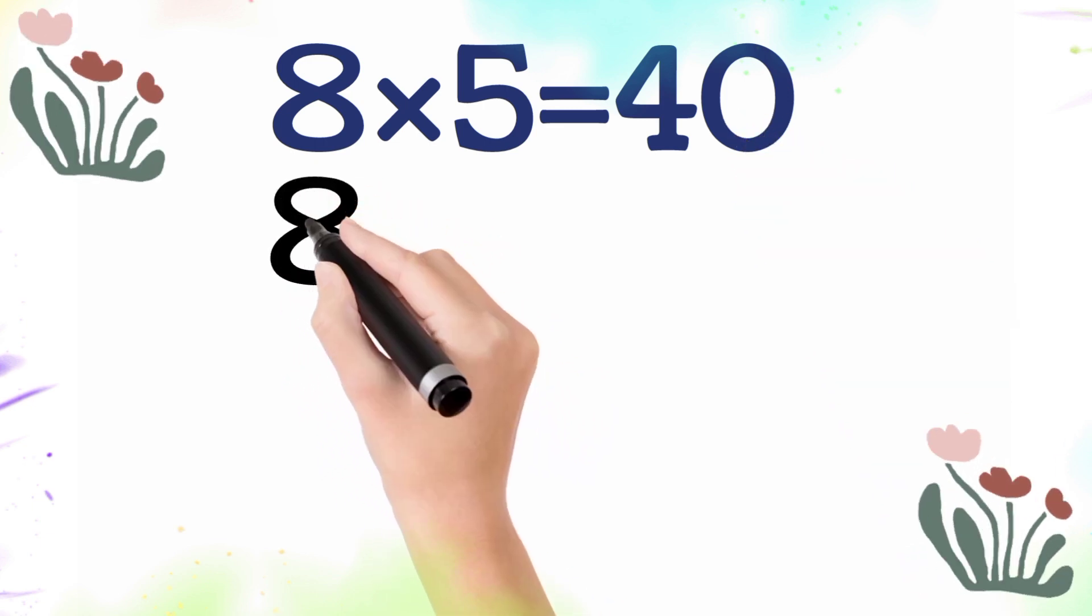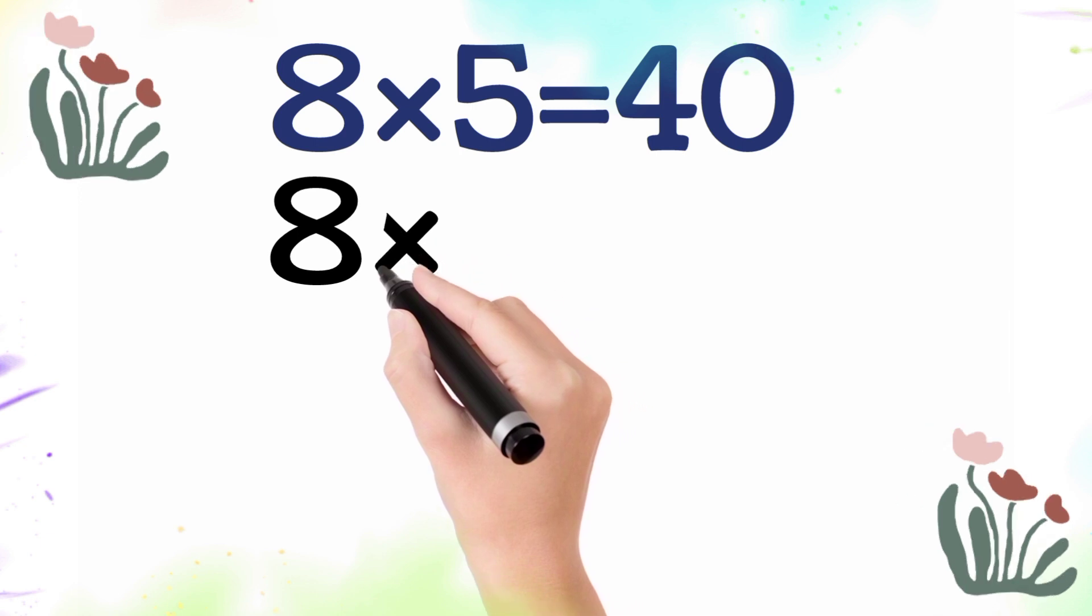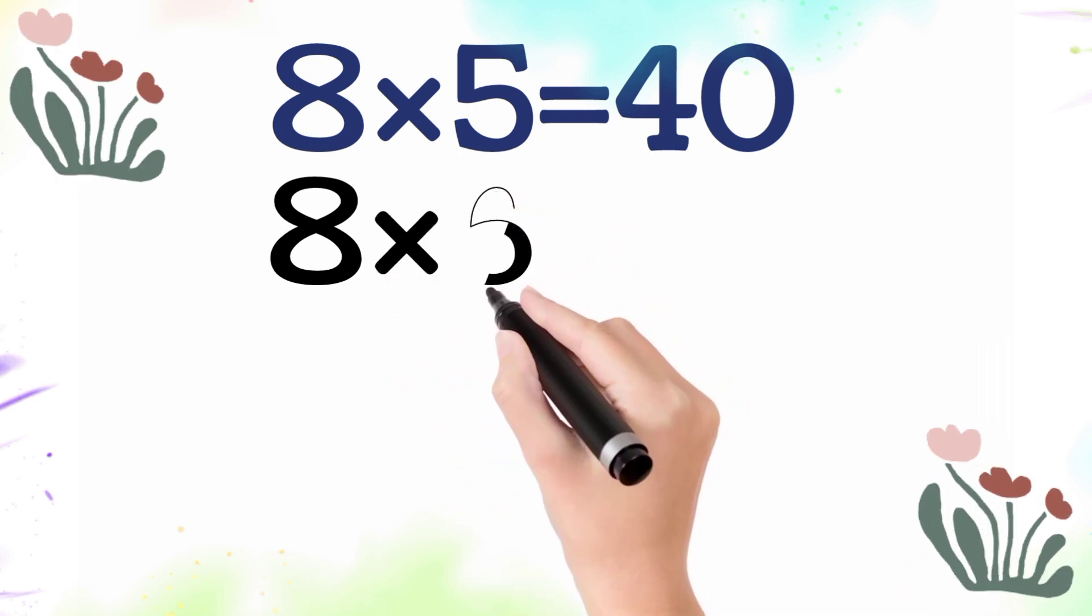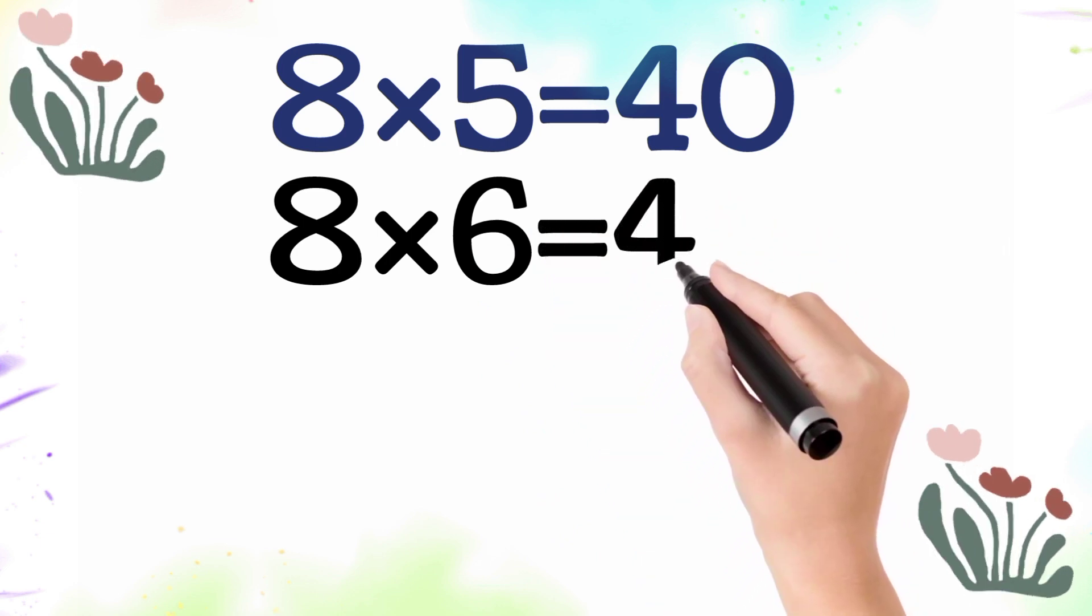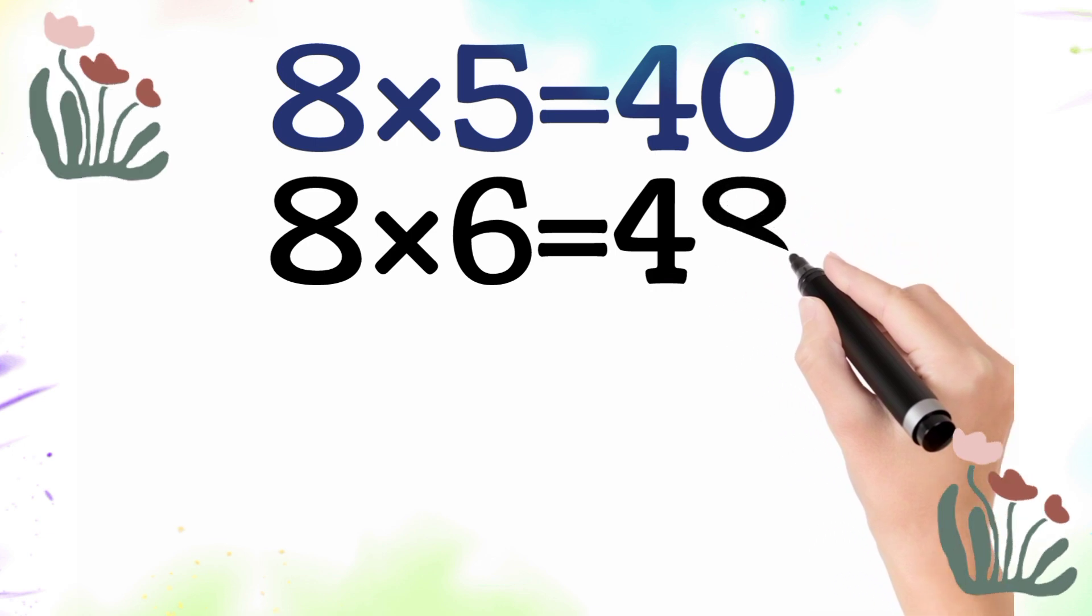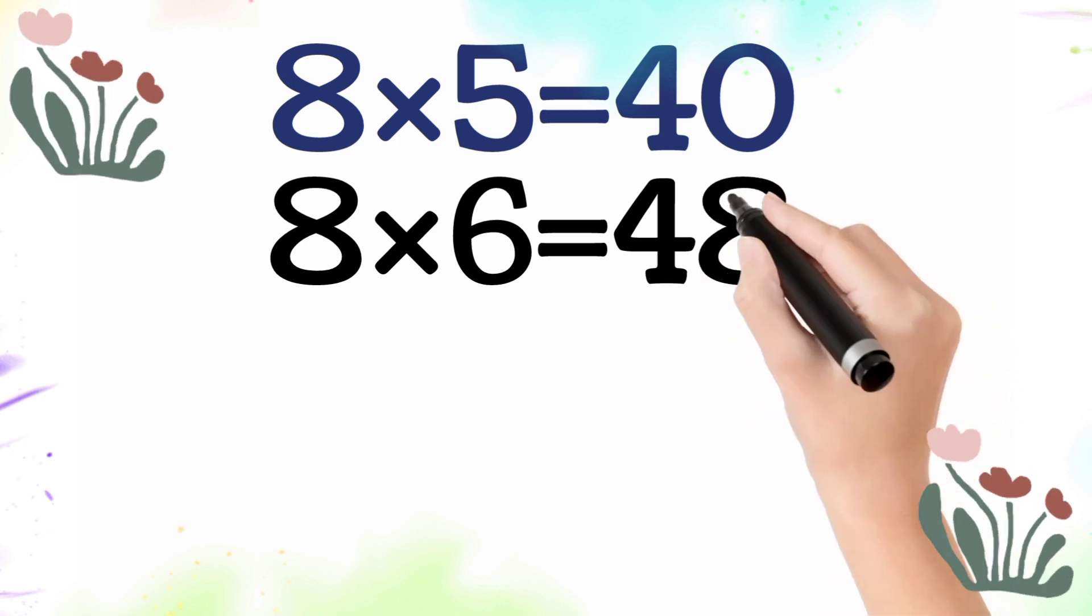8 multiplied by 6 is equal 48. So 8 times 6 is 48.